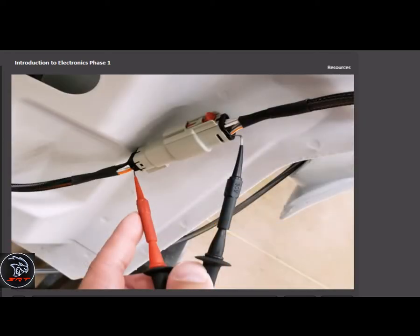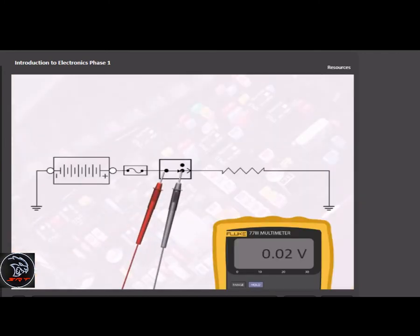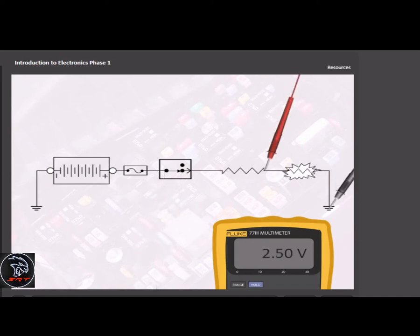Voltage drop testing measures the difference in voltage between two points in a circuit. This method can be used to identify and isolate unwanted resistance in specific circuit sections or components.